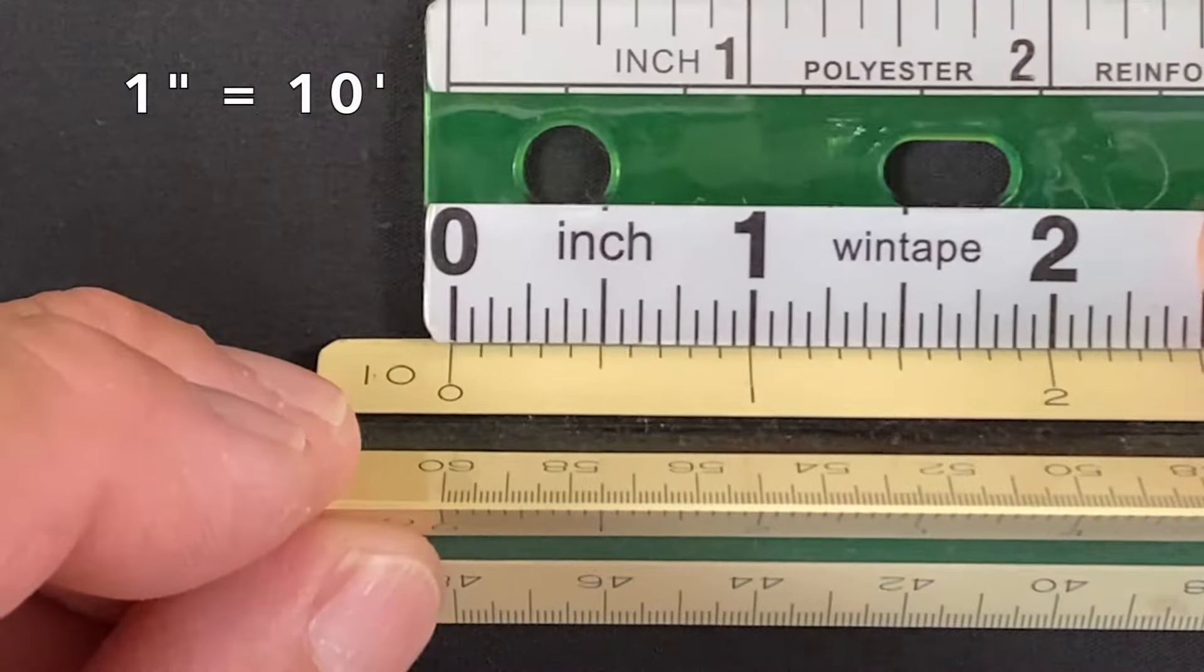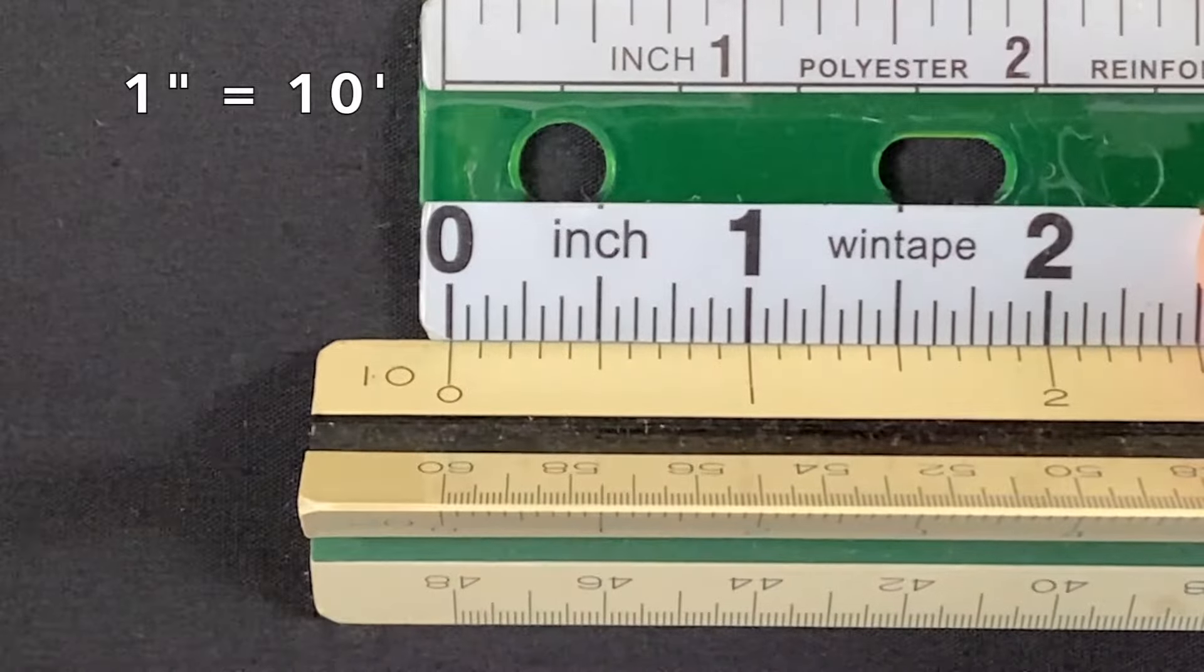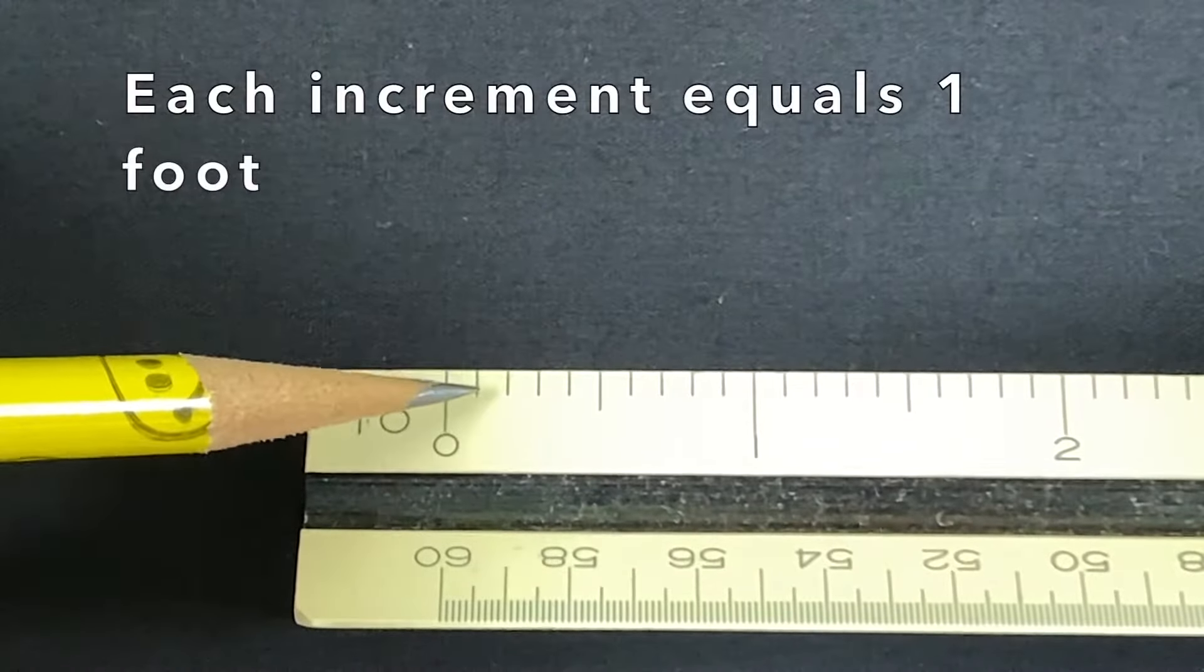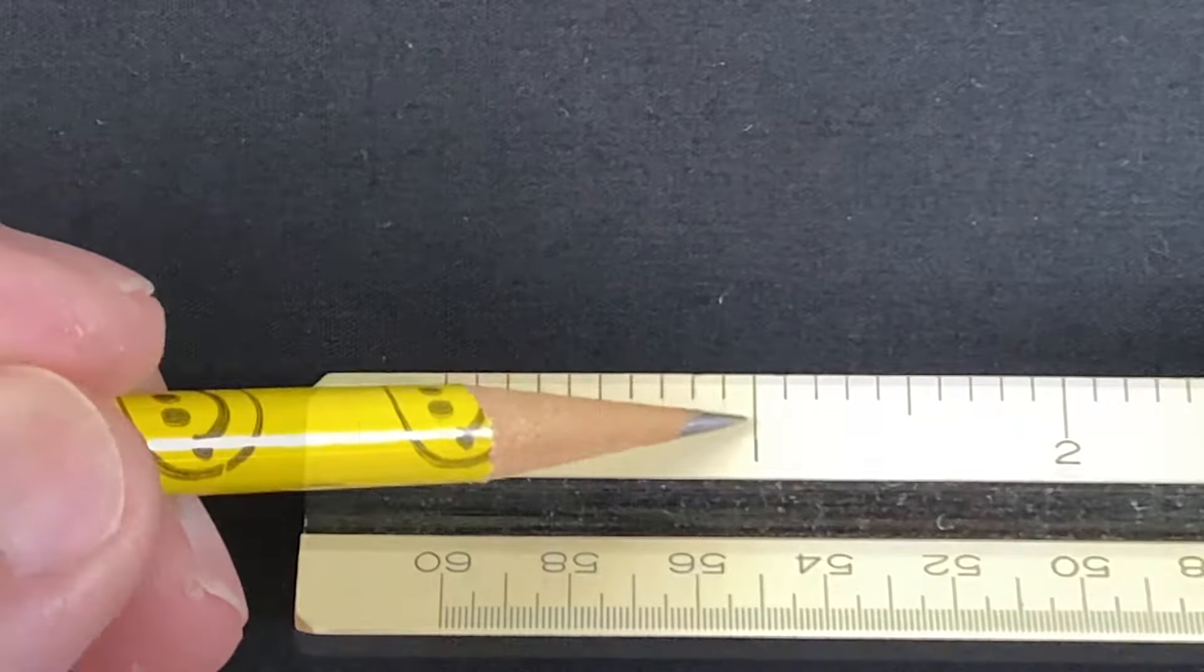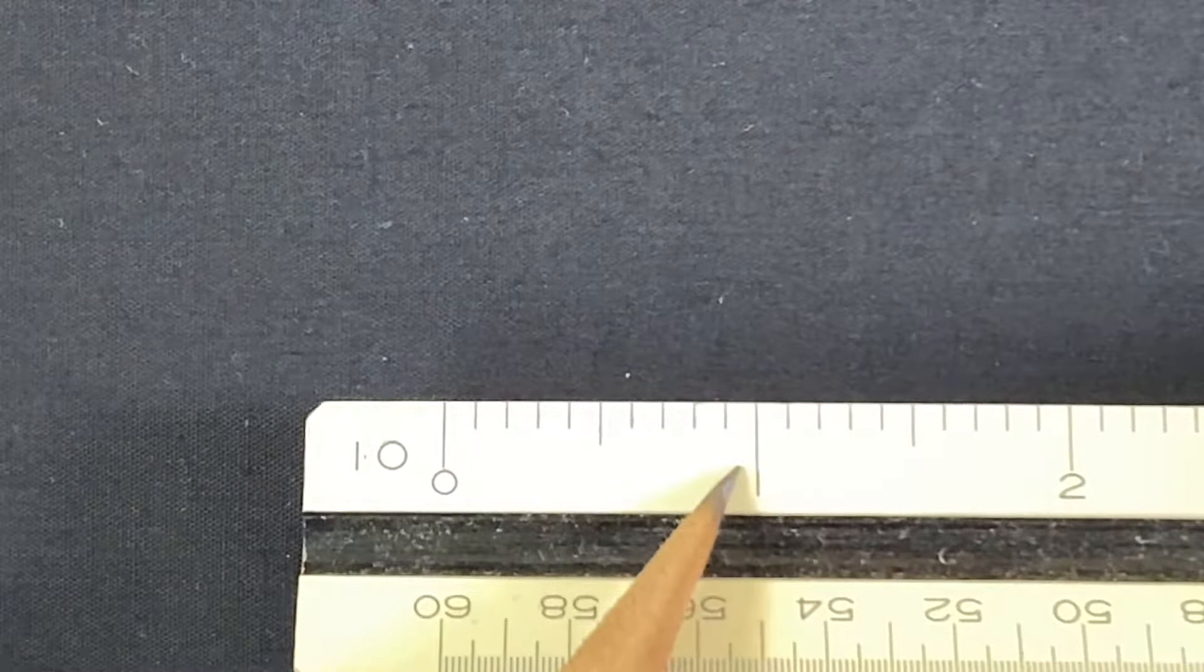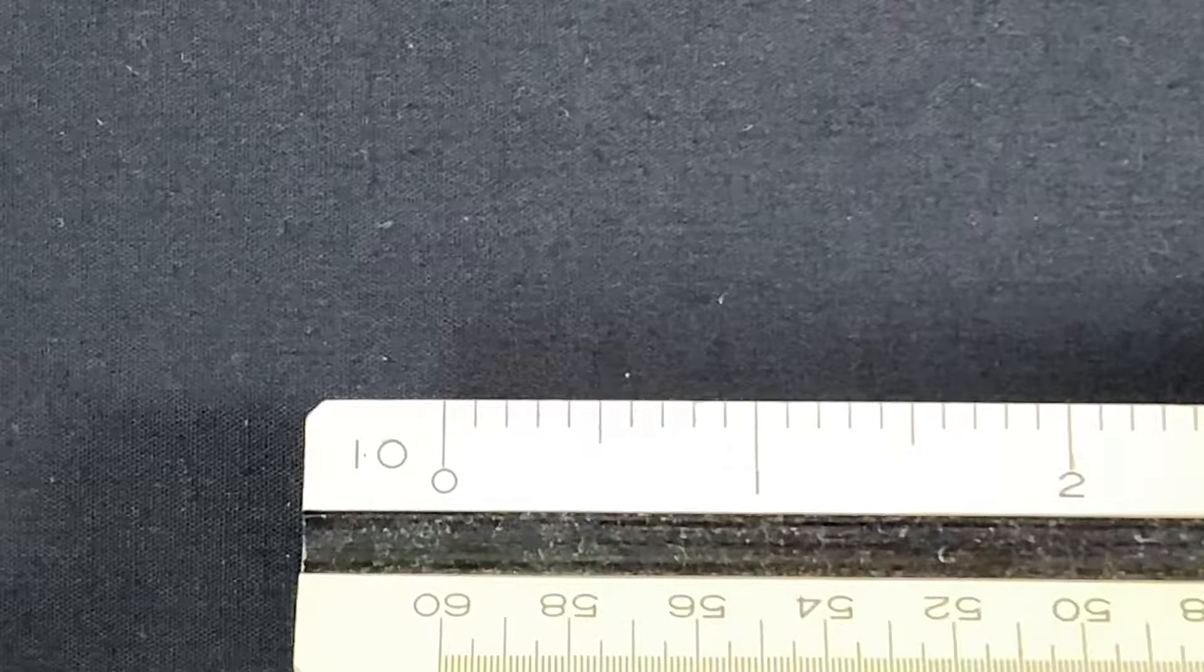On the 10 foot scale, 1 inch equals 10 feet, where each increment equals 1 foot. So 1 inch equals 10 feet, 2 inches equals 20 feet.